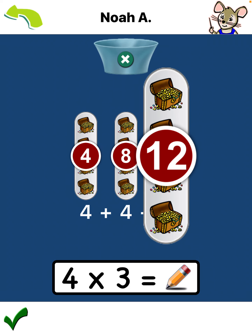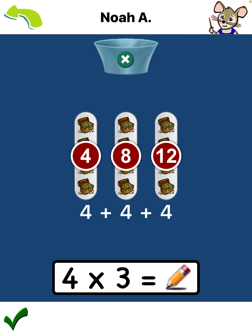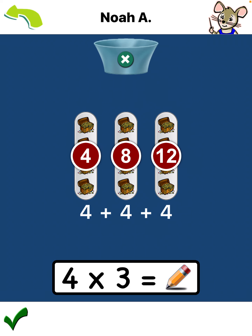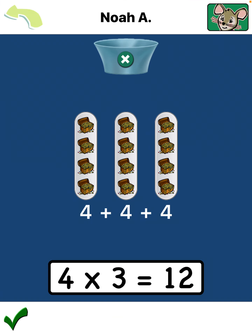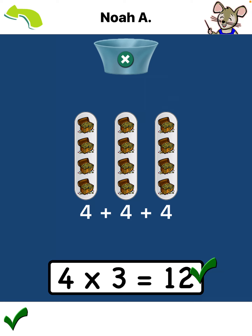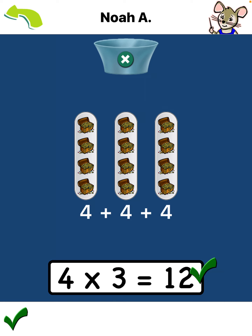Four. Eight. Twelve. Outstanding! Four times three equals twelve.